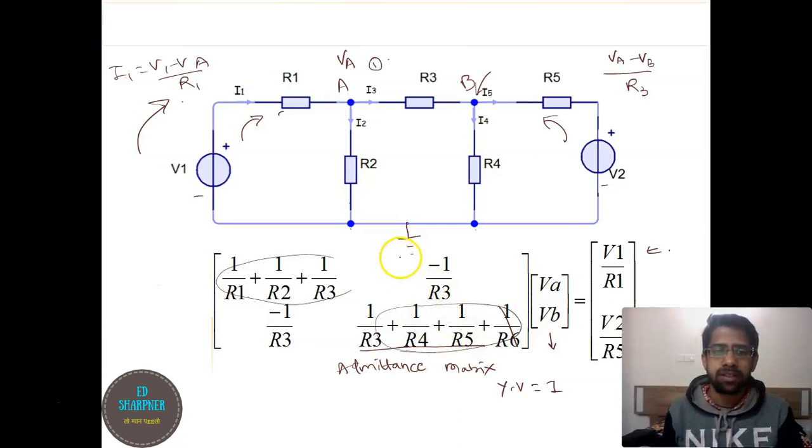And we have filled the positions 1,1 and 2,2. We have to fill up the positions 1,2 and 2,1 now. So these positions are filled up by the admittance connected in common with both the nodes. Which is the admittance connected common to both the nodes? It is 1 upon R3.